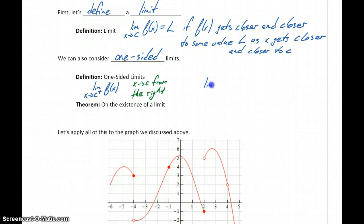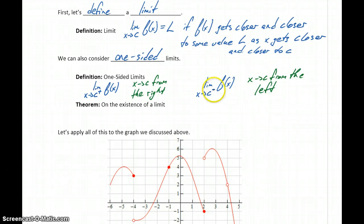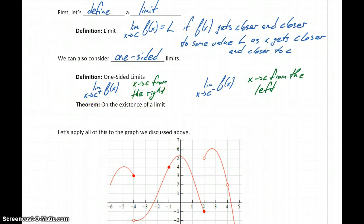Or we can consider left-hand limits. We take the limit as x approaches c from the left, indicated with a minus sign. So we're saying x is approaching c from the left — you can think of that as starting at negative infinity, far off to the left, and then tracing along your graph until you reach that point. So we can consider the limit of the function at c as we approach from the left or from the right, each of those pieces individually.